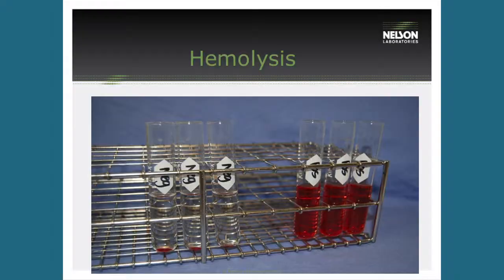In the negative control at the bottom, you can see little red pellets — those are the red blood cells that, when spun down, are intact and haven't broken apart, so they form those little red pellets on the bottom of the test tubes. In the positive control, those red blood cells have burst open and released hemoglobin, which is red — so when centrifuged, the solution is red because the hemoglobin is released and mixes with the solution. All we have to do is measure how much red is there compared to our controls — the more red, the more hemolysis has taken place.